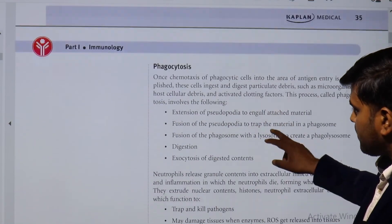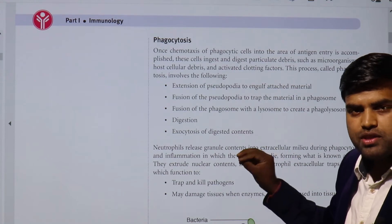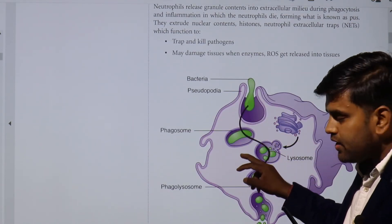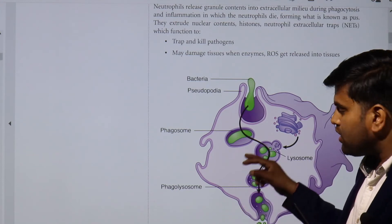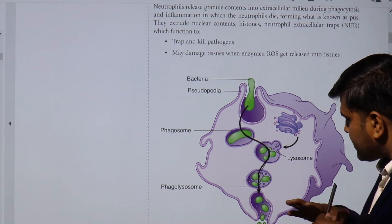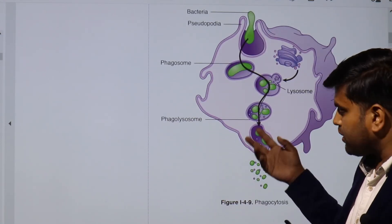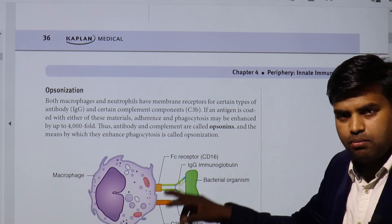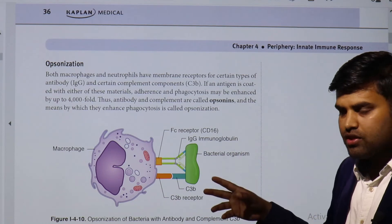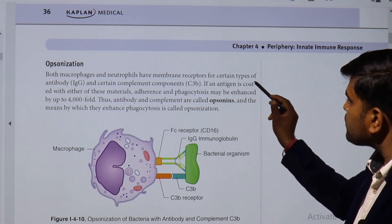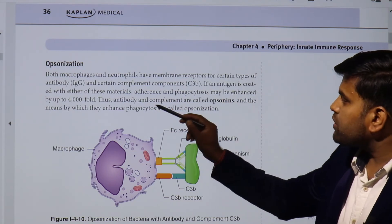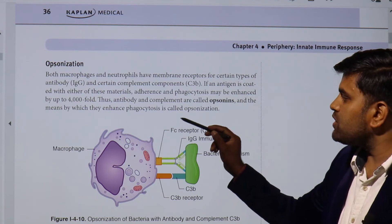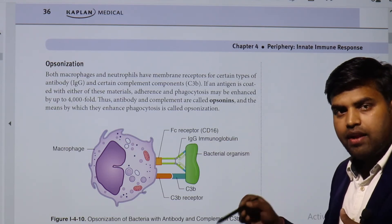To summarize: phagocytosis involves pseudopodia engulfing bacteria into the phagosome, where killing occurs by respiratory burst; then fusion with the lysosome forms the phagolysosome with enzymes that digest everything; digested content is released by exocytosis; and the neutrophil dies, becoming pus. If the neutrophil cannot control the infection, it takes help from macrophages, which kill by opsonization. Opsonization: macrophages and neutrophils have membrane receptors for IgG and complement proteins. When an antigen is coated with these, adherence and phagocytosis are enhanced up to 4000-fold. Thus antibody and complement are called opsonins, and this enhanced phagocytosis is called opsonization.